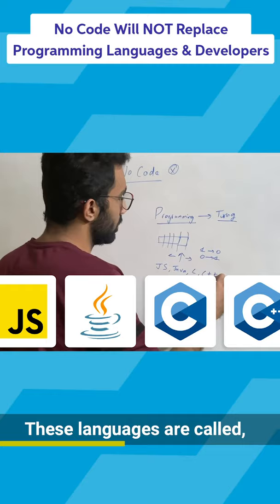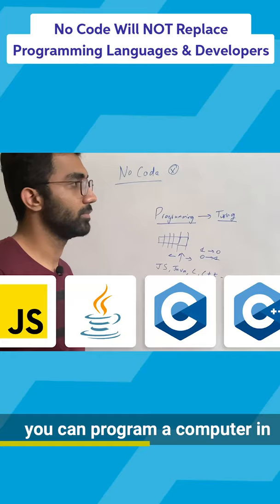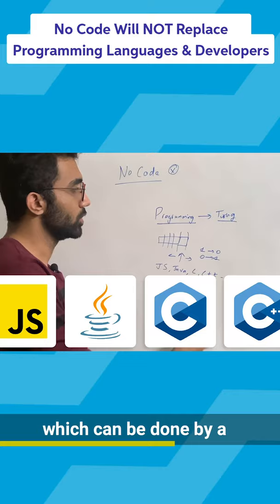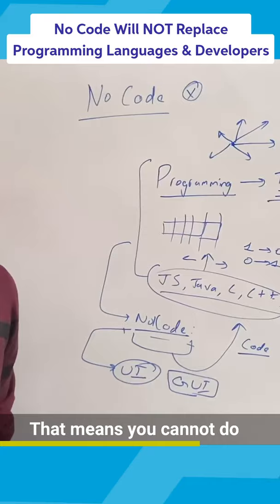Programming languages like JavaScript or Java or C or C++, these languages are called Turing complete languages because you can program a computer in these languages and write any sort of program which can be done by a Turing machine as well.